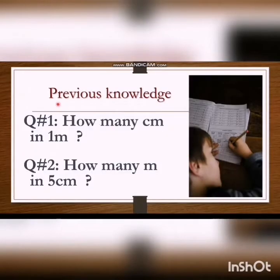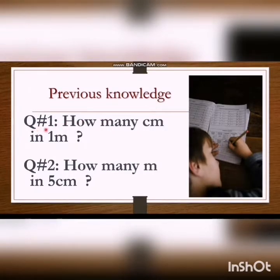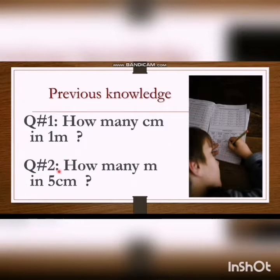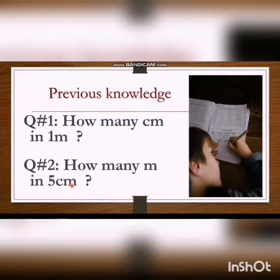We start from our previous knowledge. Question number 1: How many centimeters in 1 meter? We know from our previous week that there are 100 centimeters in 1 meter. Question number 2: How many meters in 5 centimeters? This is the reverse question. We convert smaller value to greater value. We divide 5 by 100 and we get 0.05 meters.